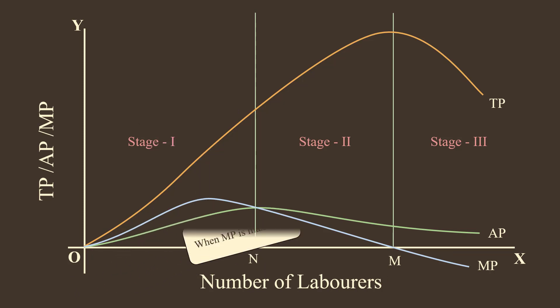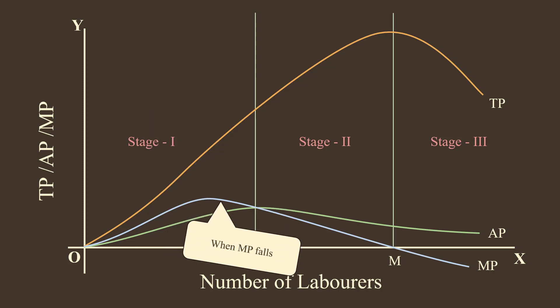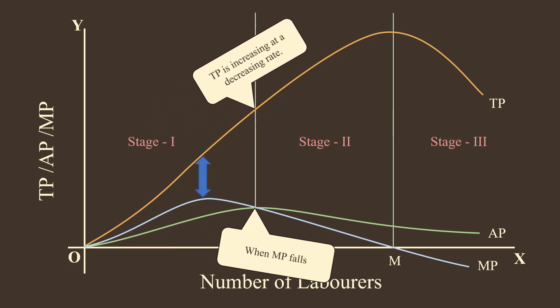5. Total product is increasing at an increasing rate when marginal product increases. When marginal product is maximum, total product increases at a constant rate. 7. When marginal product falls, total product is increasing at a decreasing rate.